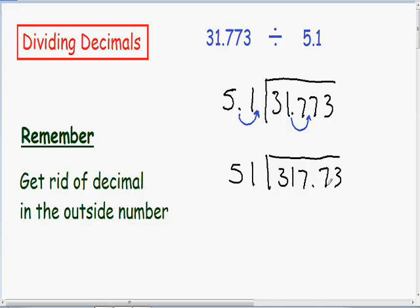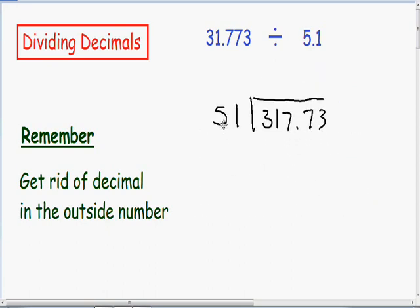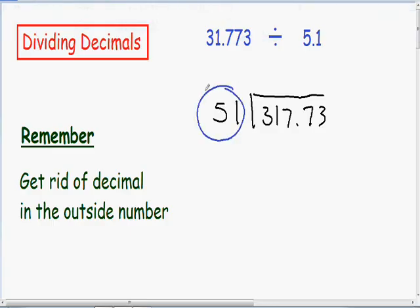So 31.773 divided by 5.1 is exactly the same as 317.73 divided by 51. So now I'm just going to give myself a little bit more space and erase this on the top. And I'll move this a little farther up. So now that we got rid of the decimal in the outside number, we can just divide this using normal long division. So let's just get started right away.